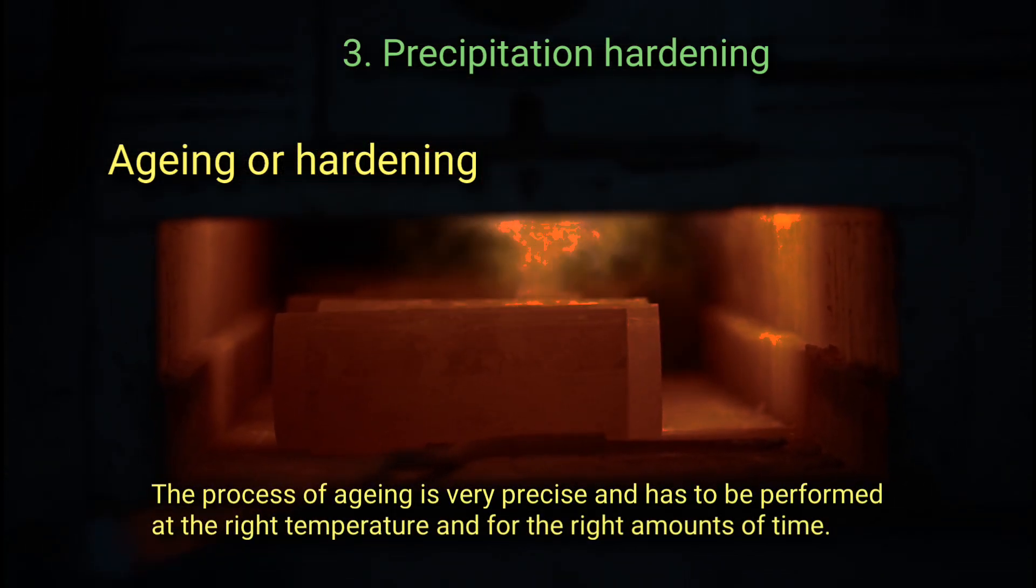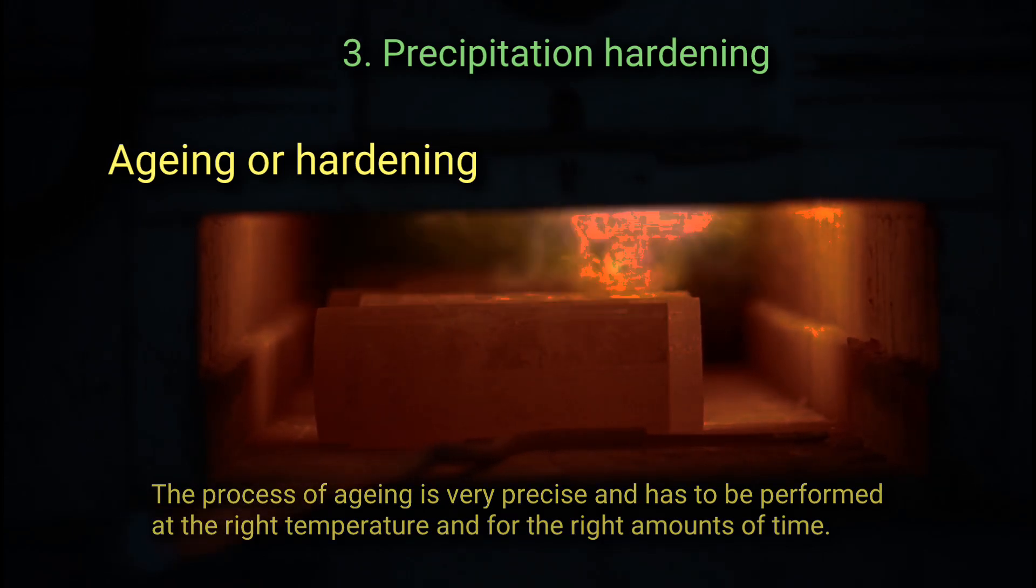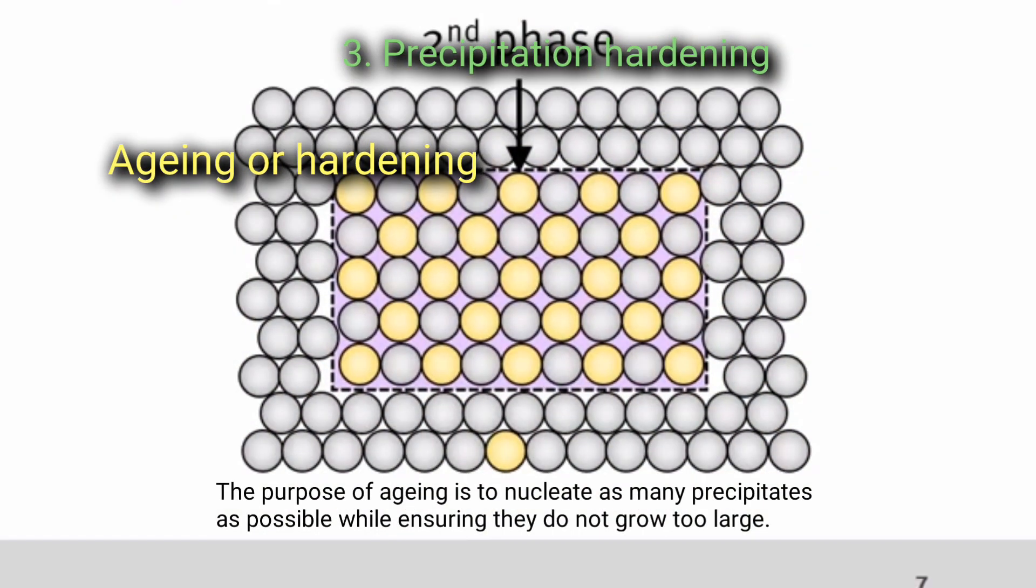The process of aging is very precise and has to be performed at the right temperature and for the right amount of time. The purpose of aging is to nucleate as many precipitates as possible while ensuring they do not grow too large.